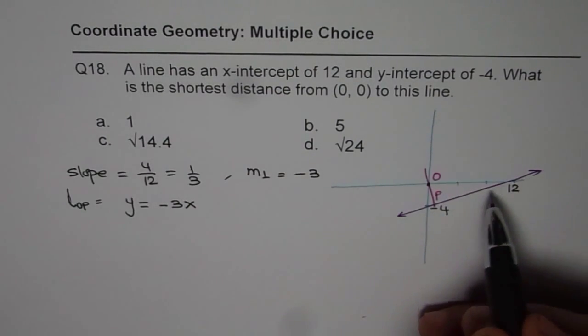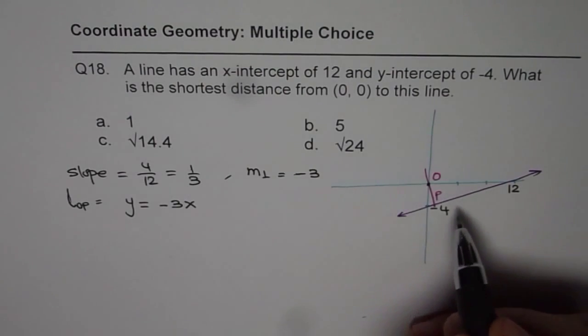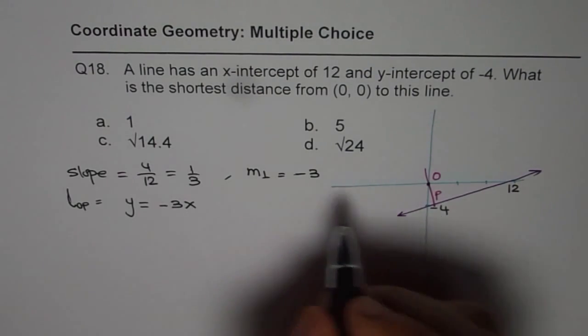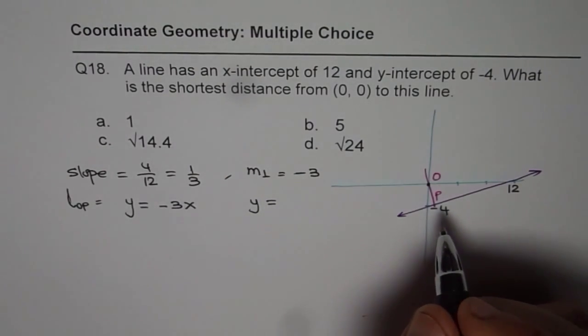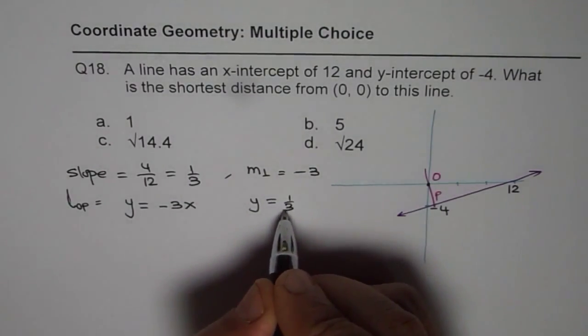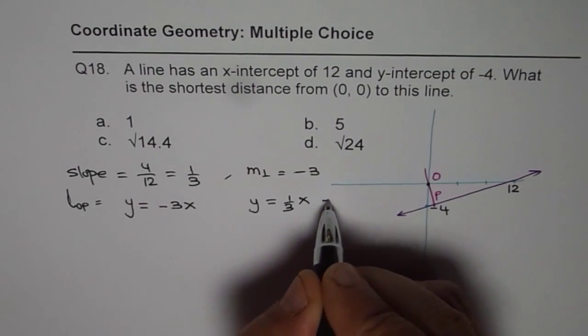Now, what is the equation of the given line? Slope is 1 over 3, y intercept is minus 4. So the equation of the line is y equals 1 over 3x minus 4.